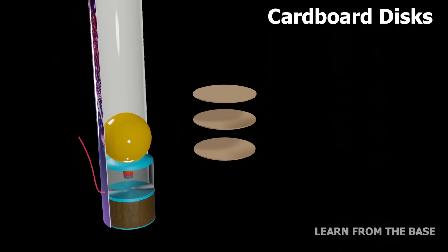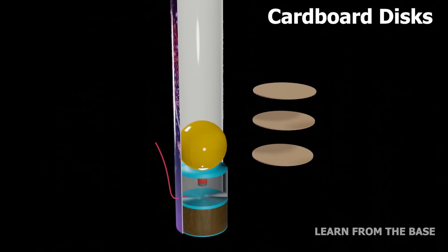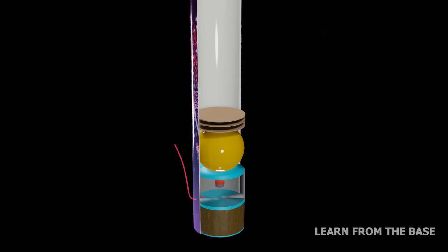These are the cardboard discs. They help to keep the shell in place within the mortar, providing proper sealing for the shell.